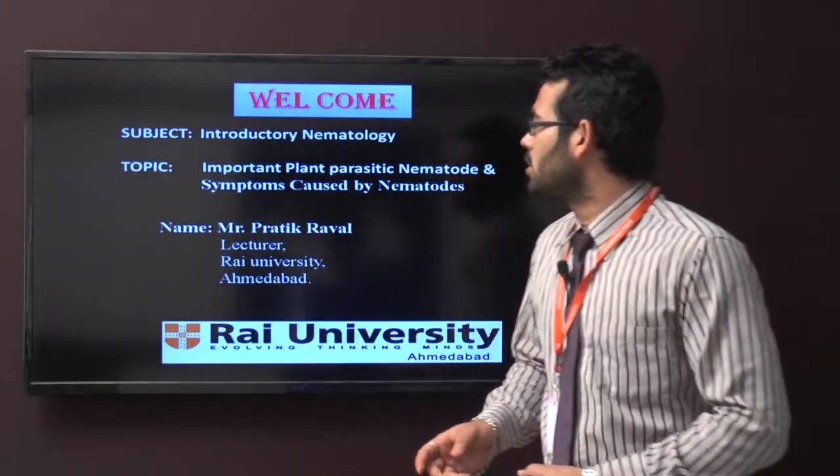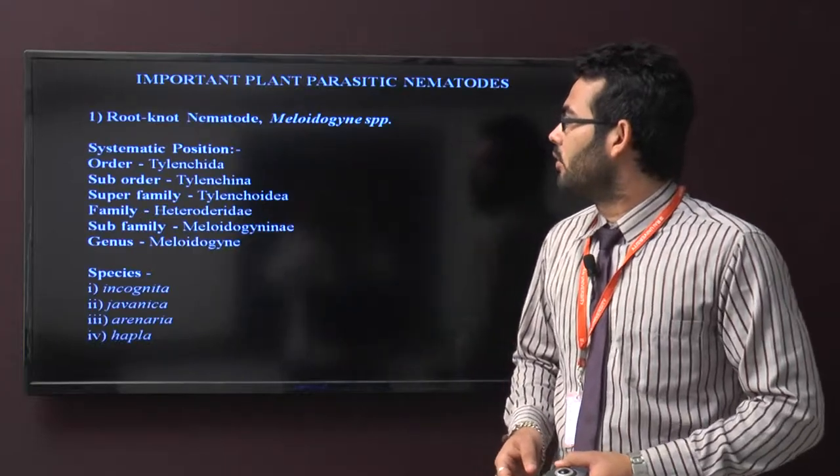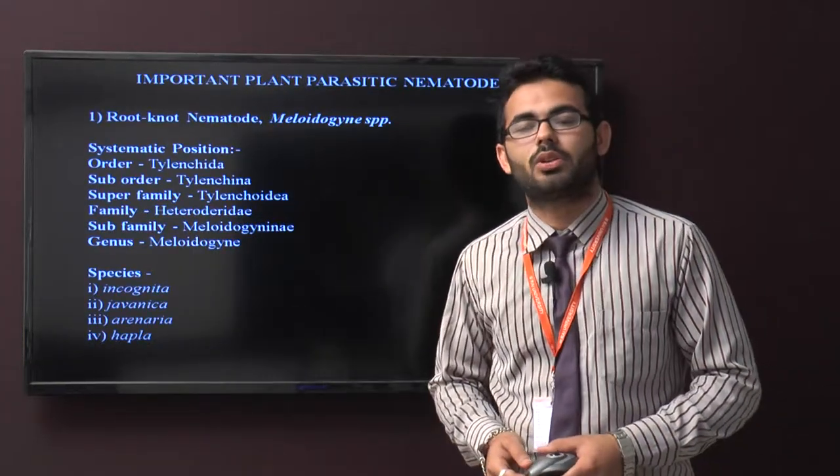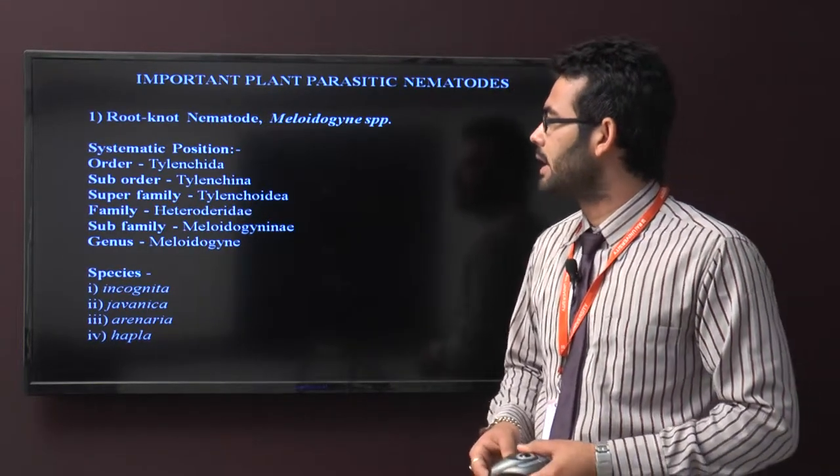Today we discuss important plant parasitic nematodes and symptoms caused by them. The first nematode is root knot nematode, scientific name Meloidogyne species. It belongs to order Tylenchida, suborder Tylenchina.